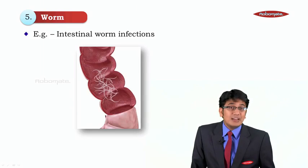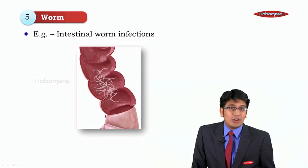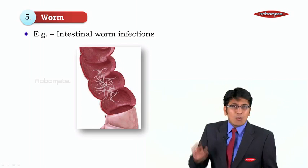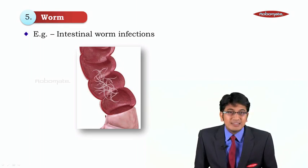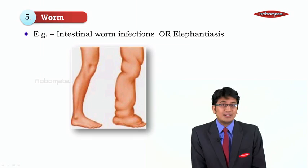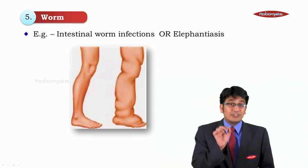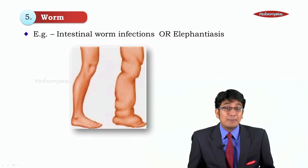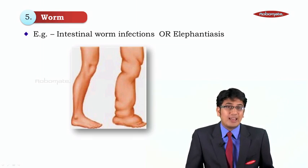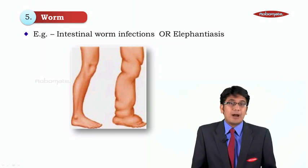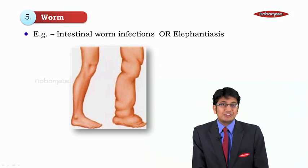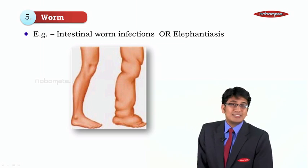Worms also cause serious infections. Intestinal worms such as Ascaris are very dangerous — they get inside your body and cause ascariasis, with white worms moving inside your intestine. Elephantiasis is caused by the filarial worm, which enters your skin; the affected part becomes enlarged like an elephant's leg, which is why it is called elephantiasis. It is very common in some parts of Kerala. So these are the infectious agents that can cause diseases.